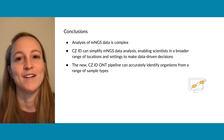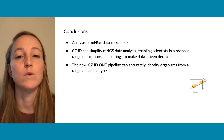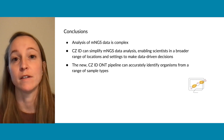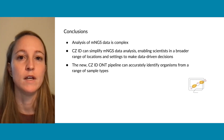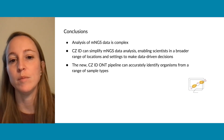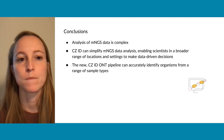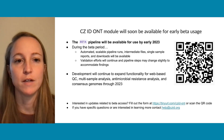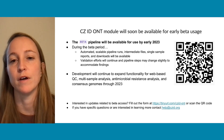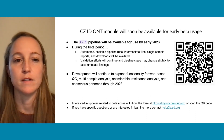The analysis of metagenomic data is complex, but CZID provides one tool for enabling scientists to access metagenomic data analysis in a simple and easy-to-use way. The new CZID ONT pipeline is successfully able to identify organisms from a range of sample types. We're excited that this module will soon be available for early beta usage, and we would encourage anyone interested in staying up to date to scan the QR code or visit the website listed.